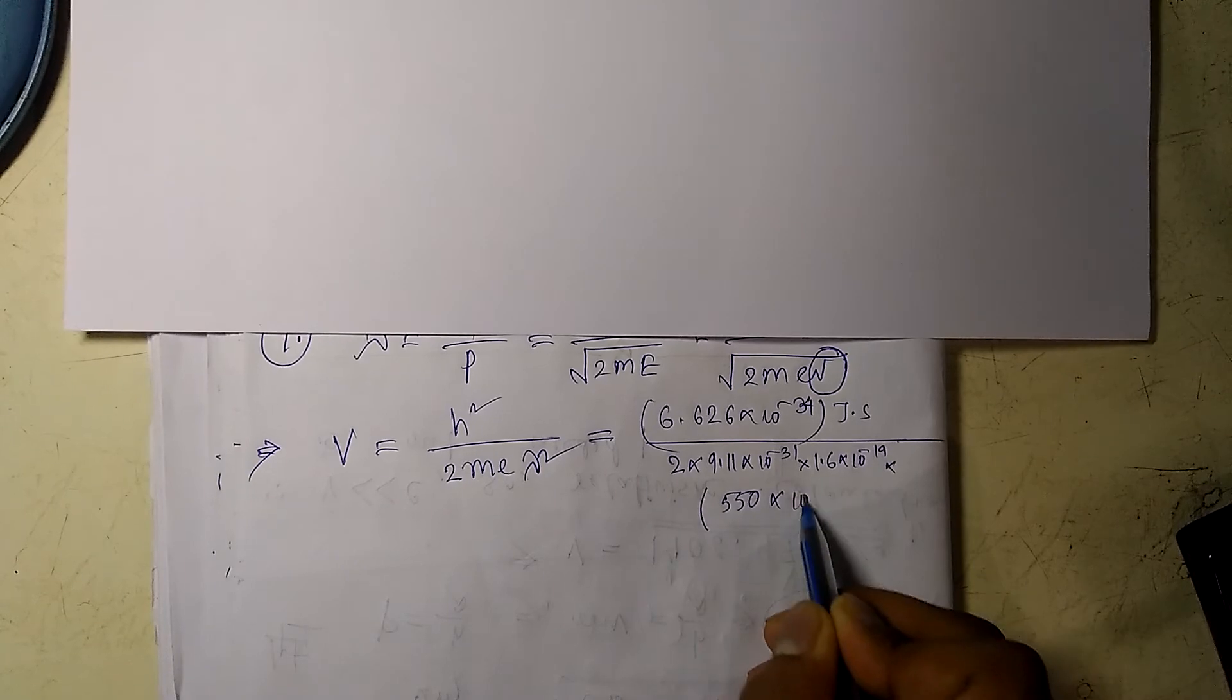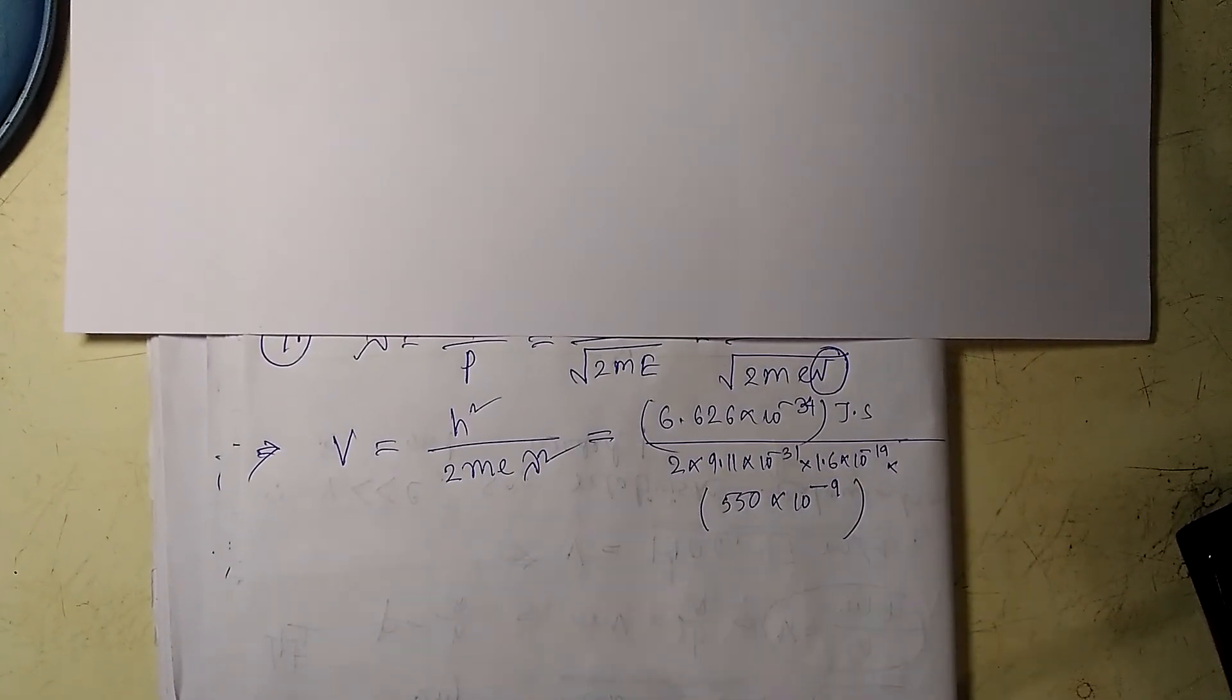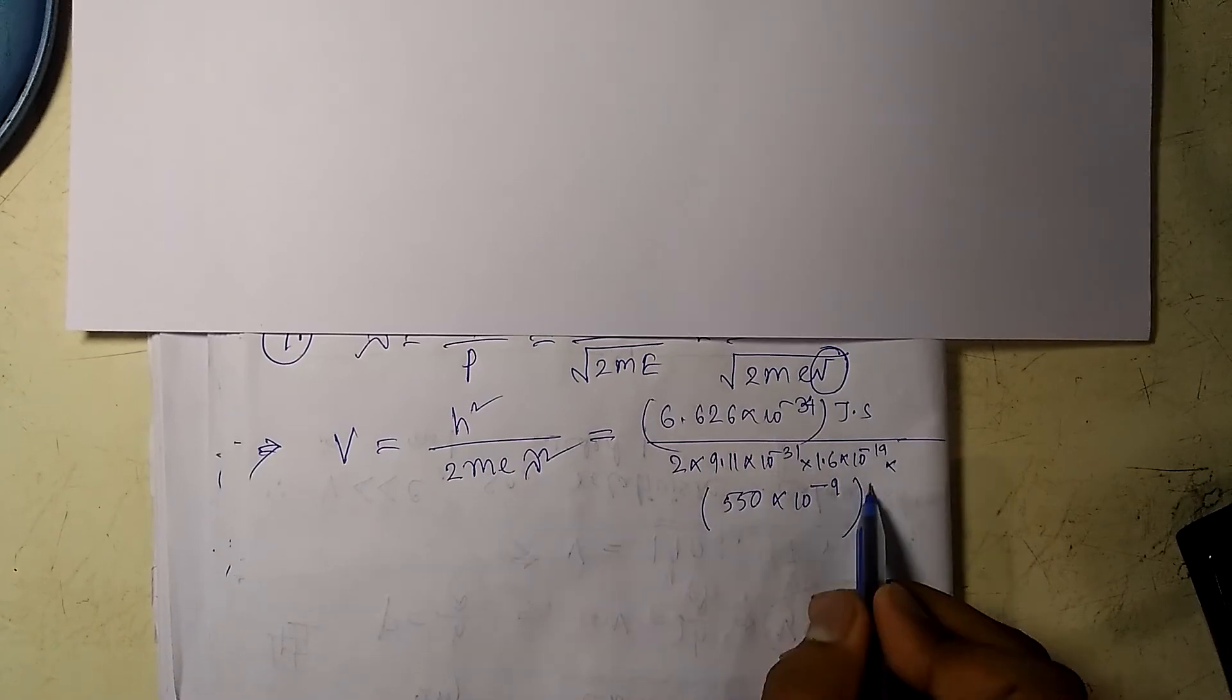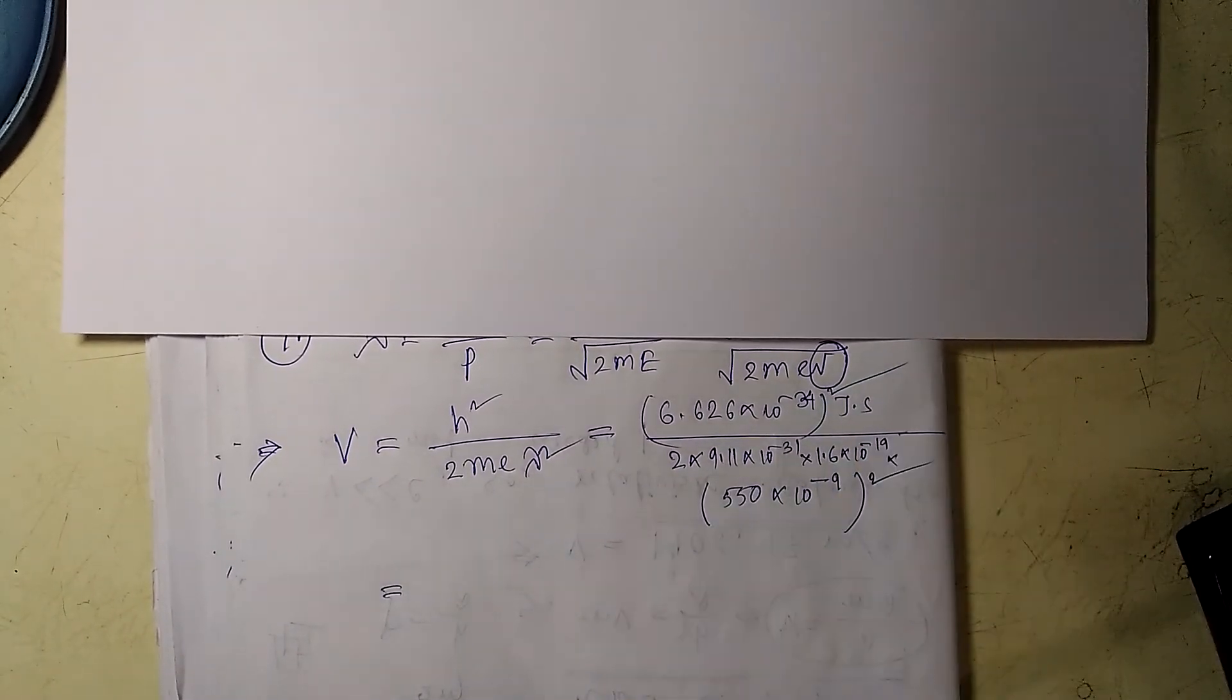And then lambda, which is given as 550 nanometers. So nanometer to meter, 1 nanometer equals 10 to the minus 9 meters, so it would be squared. And it would also be squared.